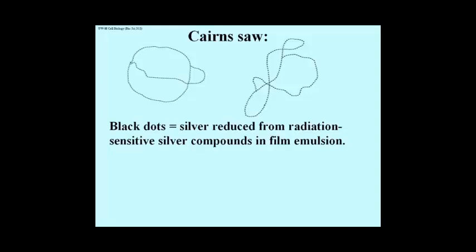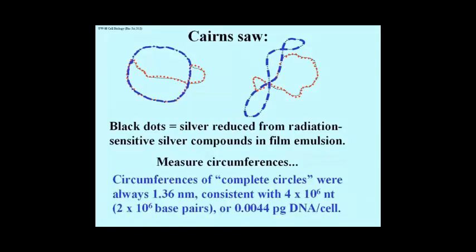But this was visual proof of what was until then an abstract understanding. Cairns measured the circumferences of these various circles, and he found that what he would call complete circles, that show up in blue or red here, always measured 1.36 nm in circumference, consistent with the length expected for a double-stranded DNA molecule containing 4 million nucleotides, or 2 million nucleotide pairs, or base pairs. And that was consistent with a measured 0.044 picograms of DNA per E. coli cell. So it's quite clear that this is a visual manifestation of an E. coli chromosome.